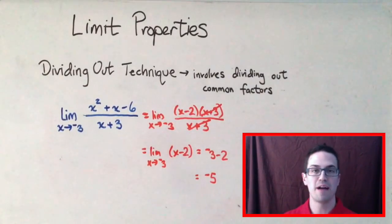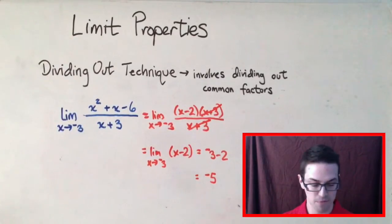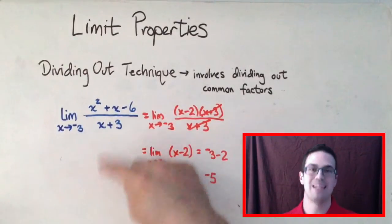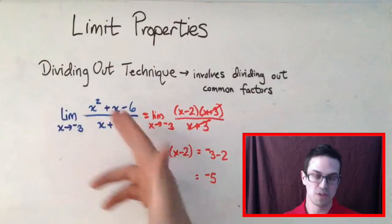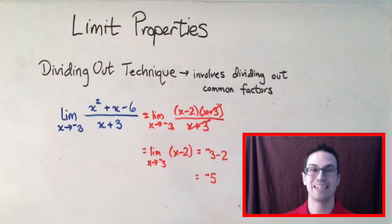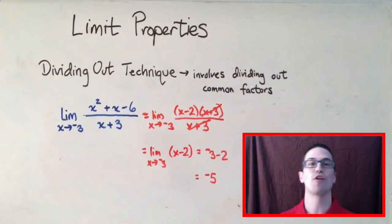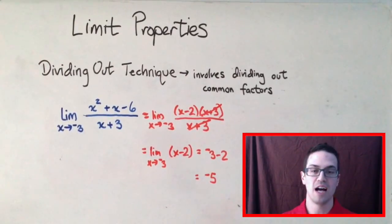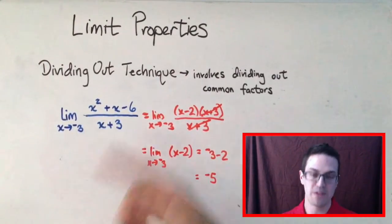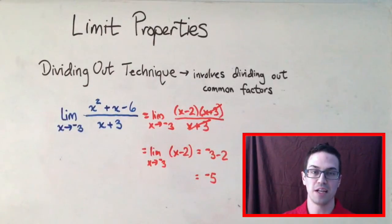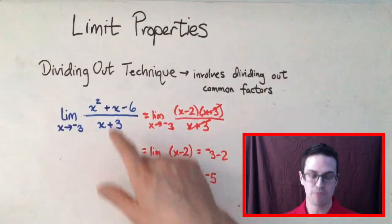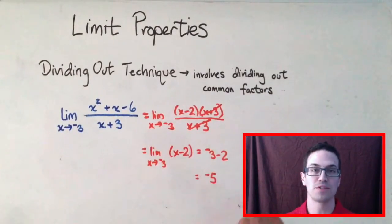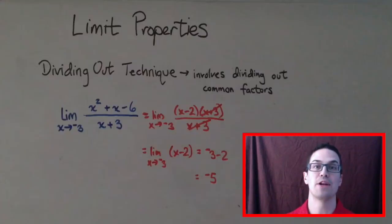So that's the dividing out technique. The most important things to remember: you have to have that indeterminate form in order to use the dividing out technique, and it doesn't always work. We're going to go over another example of when the indeterminate form comes in handy with another technique, called the rationalizing technique. If you have any questions, let me know.